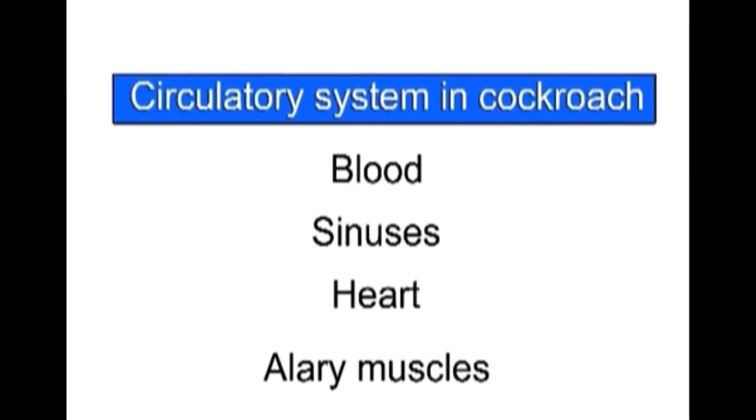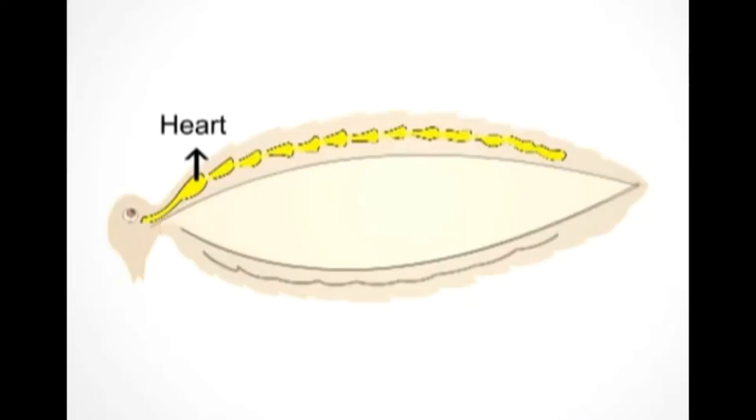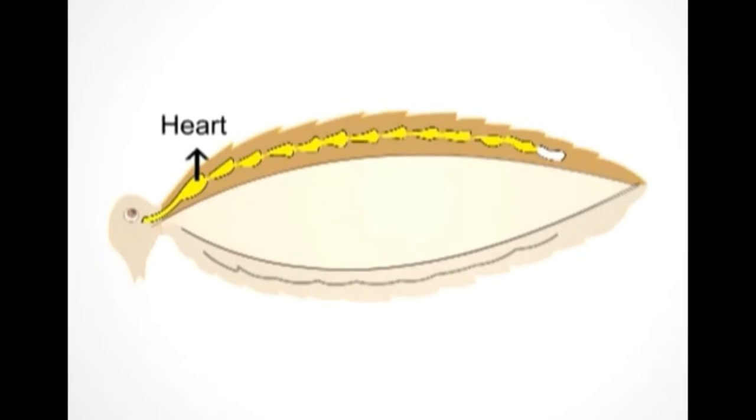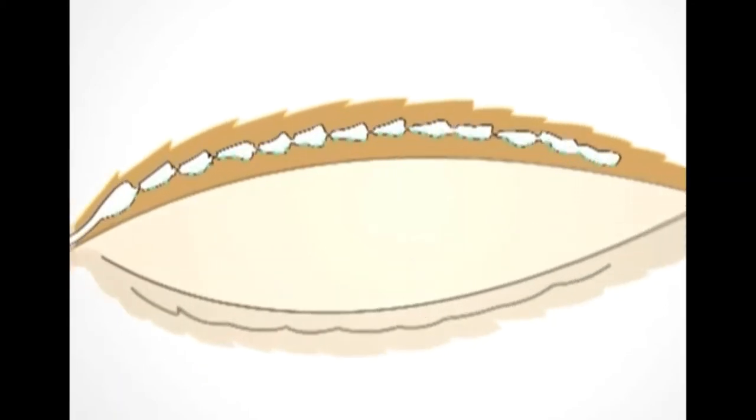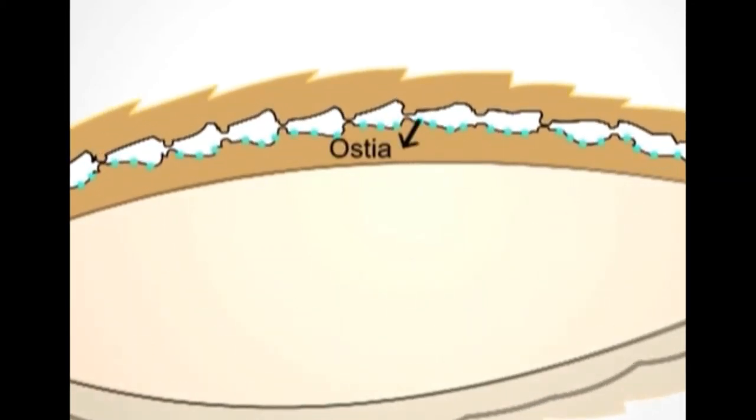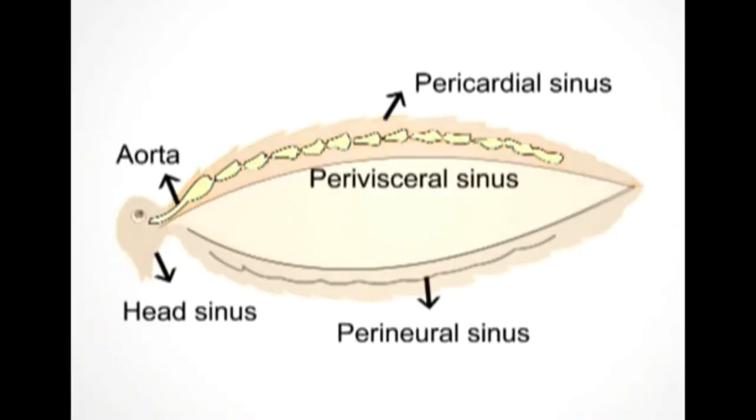The heart of cockroach is present in pericardial sinus and it consists of 13 chambers. Blood flows from posterior chamber to the preceding chamber: from 13th chamber to the 12th chamber, 12th chamber to 11th chamber, etc. They have lateral pores which open into pericardial sinus called ostia. The first chamber opens into head sinus through an aorta.